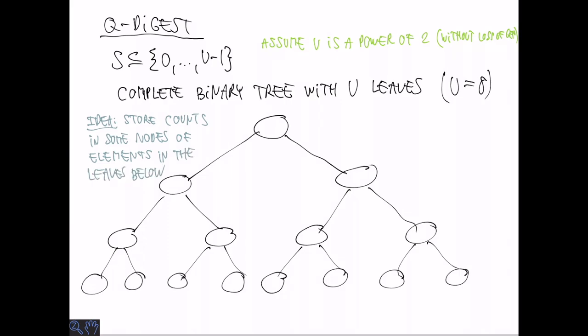If we have a count in a node, we don't actually know exactly where this count comes from. So to avoid making too large mistakes in the rank bounds, we want to avoid storing counts that are too large. So we are going to limit the counts that we can store to some number C, which is a parameter.